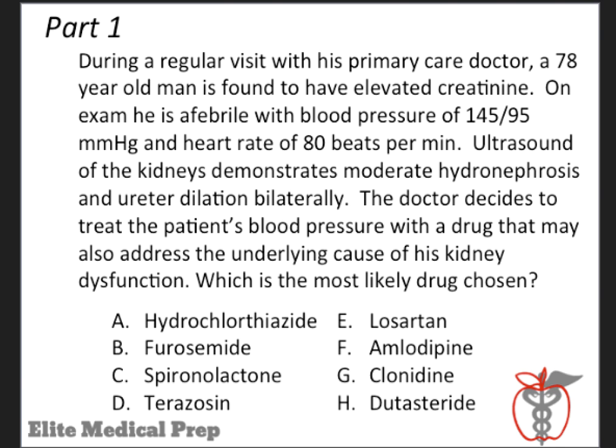Here's the question. During a regular visit with his primary care doctor, a 78-year-old man is found to have elevated creatinine. On exam, he is afebrile with BP 145 over 95 and a heart rate of 88 beats per minute. Ultrasound of the kidneys demonstrates moderate hydronephrosis and ureter dilation bilaterally. The doctor decides to treat the patient's blood pressure with a drug that may also address the underlying cause of his kidney dysfunction. Which is the most likely drug chosen? Please note that this vignette is part of a two-part question. The second part will come shortly.